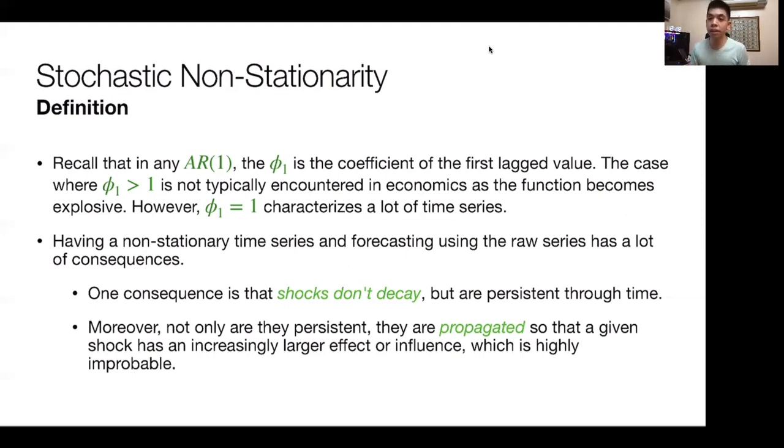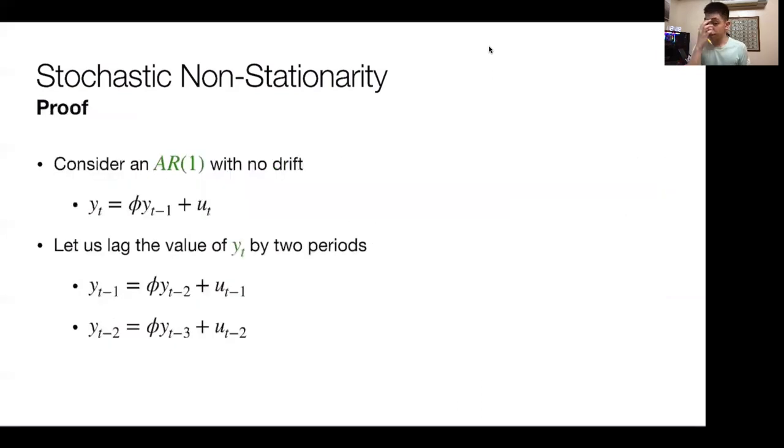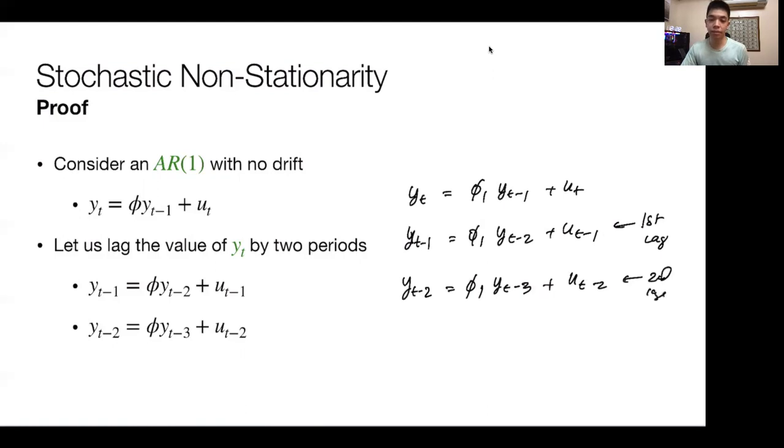So that's a consequence of dealing with non-stationary data. Just to see a proof of it, consider our AR1 model with no drift. In here, we don't assume that phi is equal to 1. If we lag the value of yt by 2 periods, so from here, this is your original model: yt equals phi yt minus 1 plus ut. If we lag it by 2 periods, the first lag is yt minus 1 equals phi 1 yt minus 2 plus ut minus 1, and your second lag would be yt minus 2 equals phi 1 yt minus 3 plus ut minus 2.